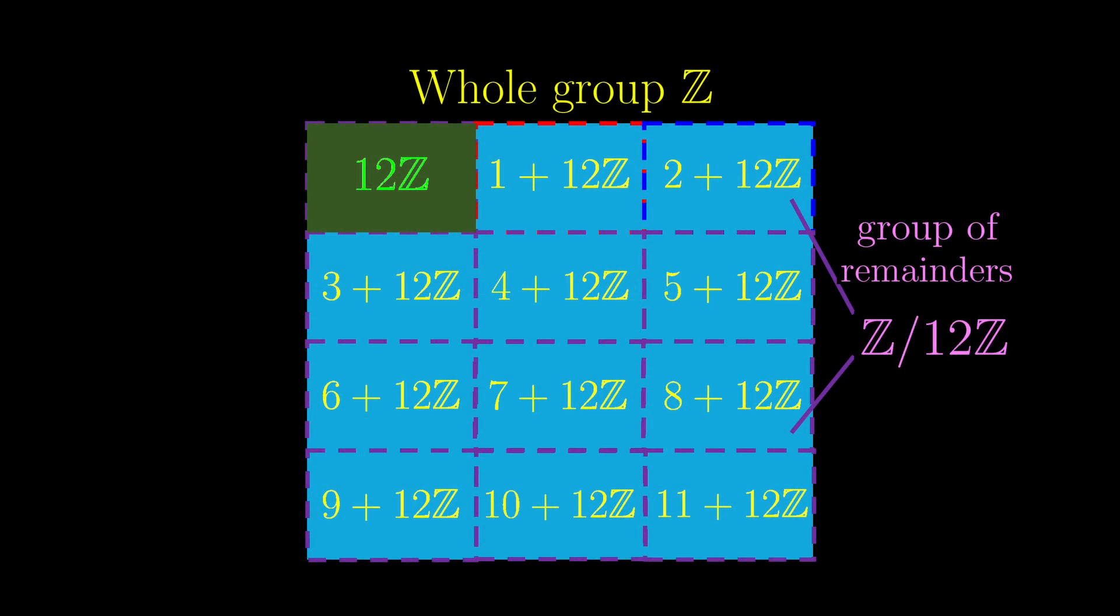Just a reminder that Z mod 12Z is a quotient group, that is, a group of cosets which themselves contain symmetries. So on one hand we have R12, with symmetries corresponding to rotations by a multiple of 30 degrees,